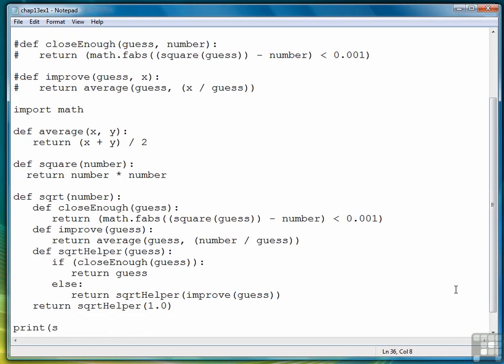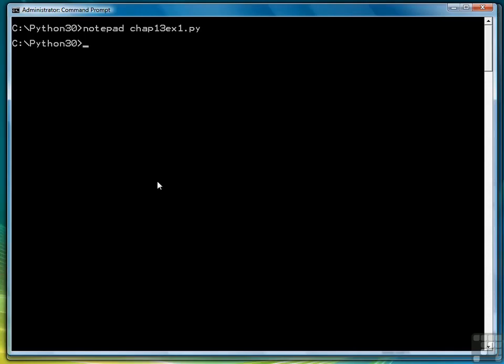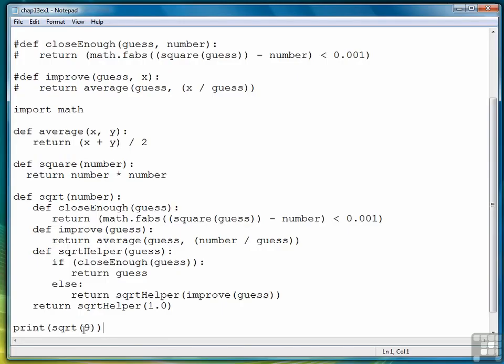We're going to print square root of 9 to start with. Save it again, come back to our command prompt, and there's the square root of 9 using Newton's method. Let's find another square root. We'll do 144.